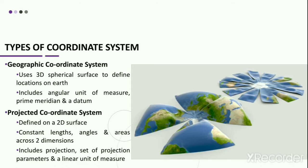A geographic coordinate system uses three-dimensional spherical surfaces to define location on the earth. It includes an angular unit of measure, a prime meridian, and a datum which is generally based on a spheroid. A spheroid defines the size and shape of the earth model, while the datum connects the spheroid to the earth. In a GCS, a point or entity is referenced by a network of latitude and longitude values, which is termed as graticules.